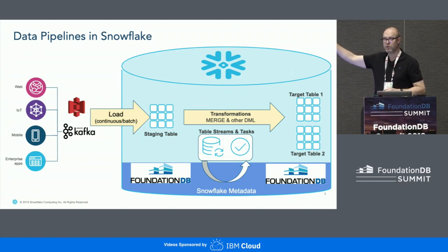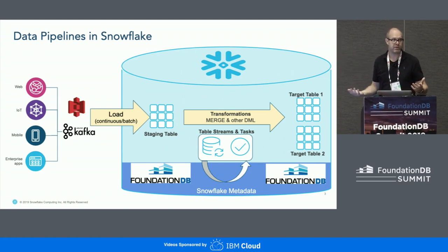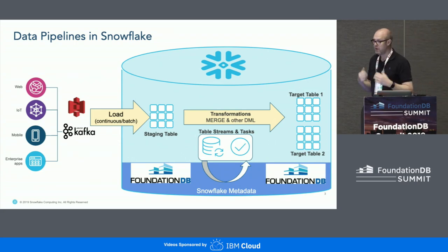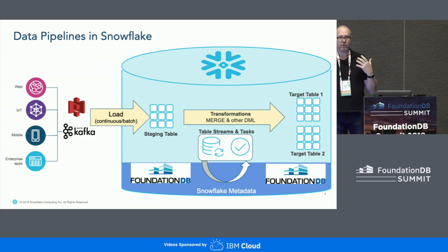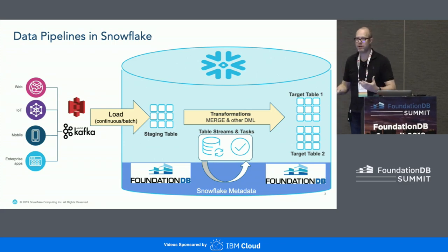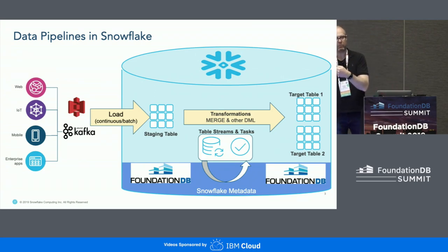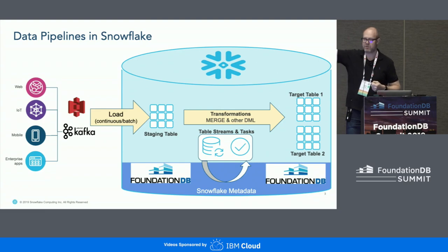Customers want to inspect the net new changes that came into the staging table, then figure out what changes need to be applied to the actual business tables used by analysts or business users. Those transformations can be simple merge statements in Snowflake SQL, but they can also be more complex stored procedures with rich business logic. The challenge is you want to run these transformations automatically — every time new changes land in the staging table, reliably process them through your business logic and apply the resulting changes to the target tables.